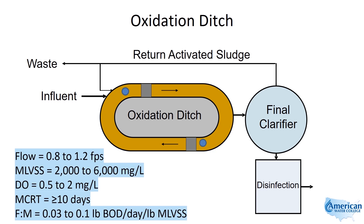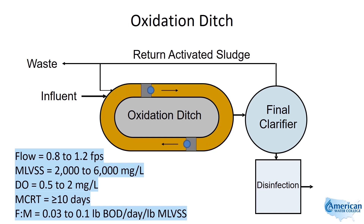The normal mixed liquor volatile suspended solids concentration in an oxidation ditch is in the range of 2,000 to 6,000 milligrams per liter. If the ditch develops a crisp white foam, the operator should reduce sludge wasting, as this indicates a young sludge or low MCRT. If a dark foam forms, the operator should increase sludge wasting, since this indicates old sludge or a high MCRT.